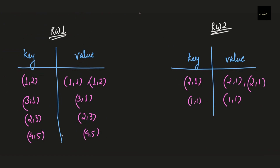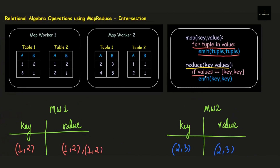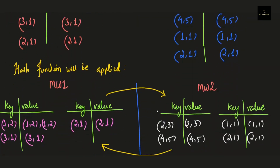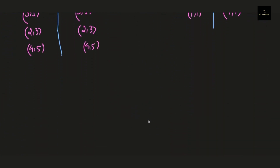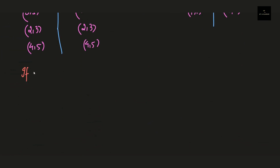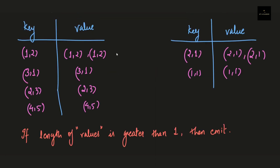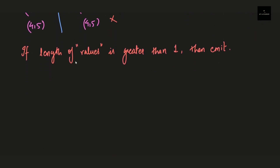If the length of the values part for a particular key is greater than one, then we will emit only those keys. Looking at the first record in reducer worker 1, the length of the values for the first key is greater than one — hence this will be a part of the final result. Similarly for reducer worker 2, the key (2,1) has a length of values greater than one, so it will also be a part of the final result.